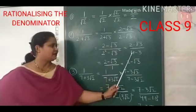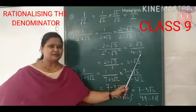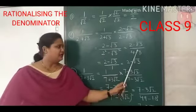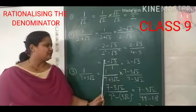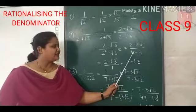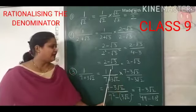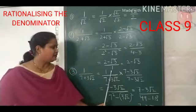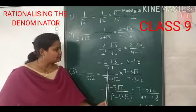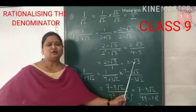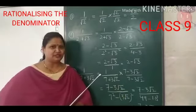When I solve this denominator, 2 squared becomes 4 and root 3 squared becomes 3. Now solve it further — 2 minus root 3 remains as it is. And when I subtract 3 from 4, I get 1. So our denominator comes to 1. Therefore, I can also write this number as 2 minus root 3. So this is the required solution of this question.